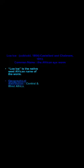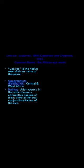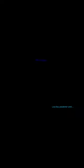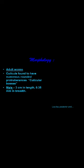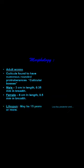Coming to Loa loa — it causes subcutaneous filariasis and is also called the African eye worm because it causes subcutaneous filariasis mainly seen in central and west Africa. The adult worms are found in the subcutaneous tissues of humans, mainly around the eye in the conjunctiva. Morphologically, adult worms are smaller than Wuchereria or Brugia malayi — adult female is around 6 centimeters and male is 3 centimeters. The lifespan is around 15 years.